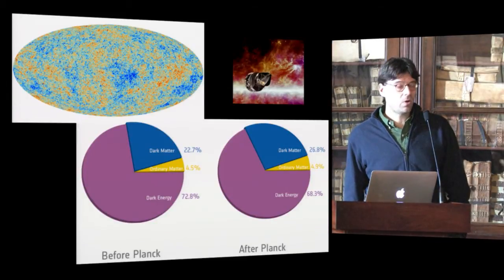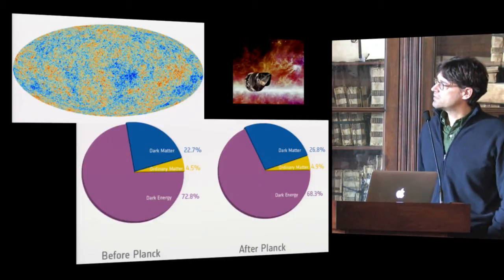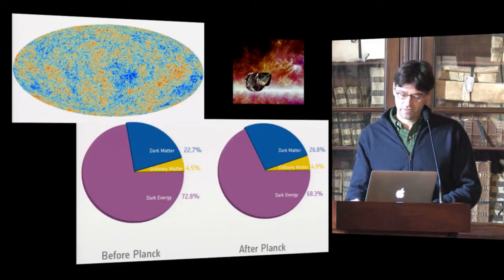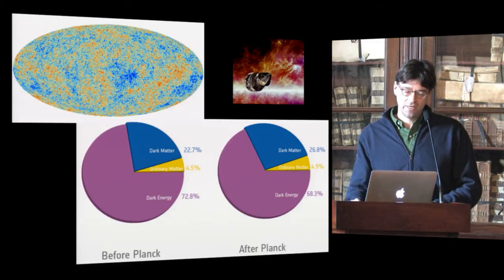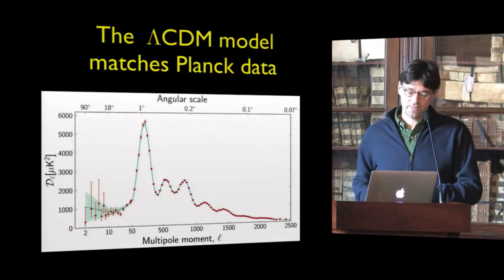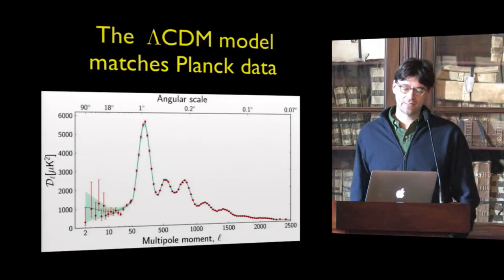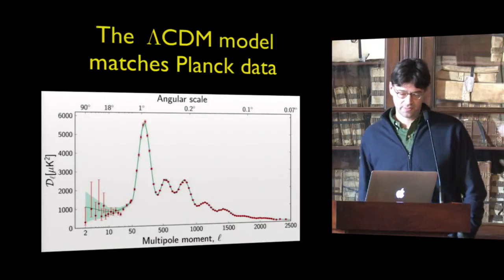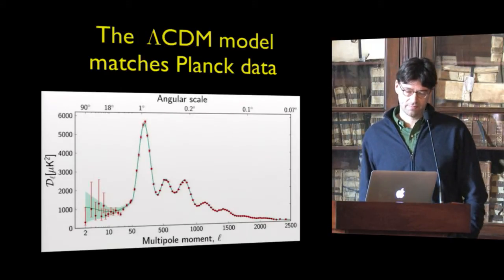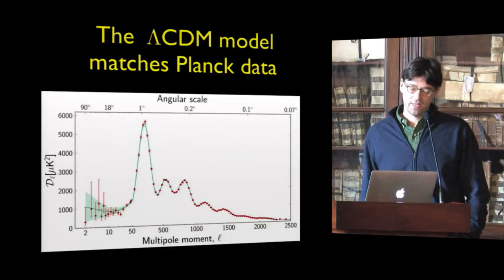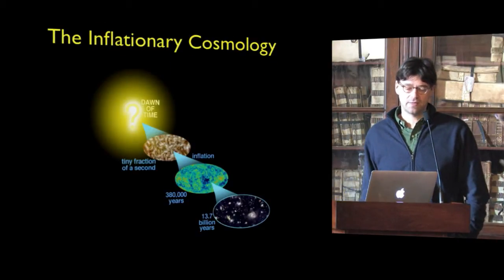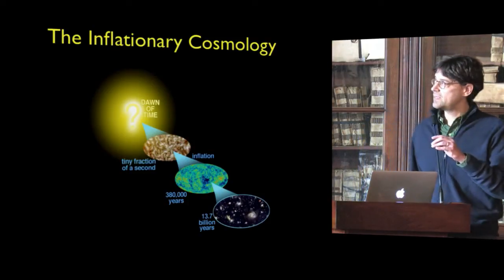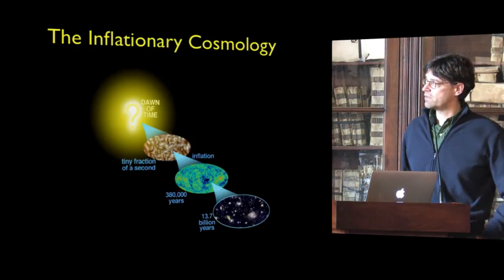Planck has given us a very simple picture of the universe. We know what the universe is made of — about 30% dark matter, and the majority of the energy density is in dark energy. But the most important thing is that the Lambda CDM model is matching the data pretty well.